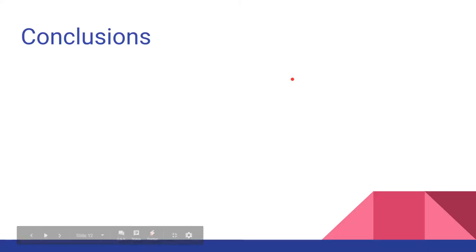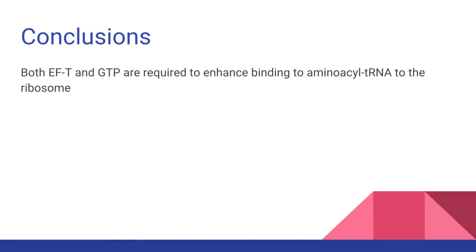So what can we conclude from these experiments? Well, we can tie these data to the current model of elongation, which has three steps. First, from the first experiment, we saw that EF-T enhanced binding of the aminoacyl-tRNA to the ribosomes, especially with increasing amounts of GTP.